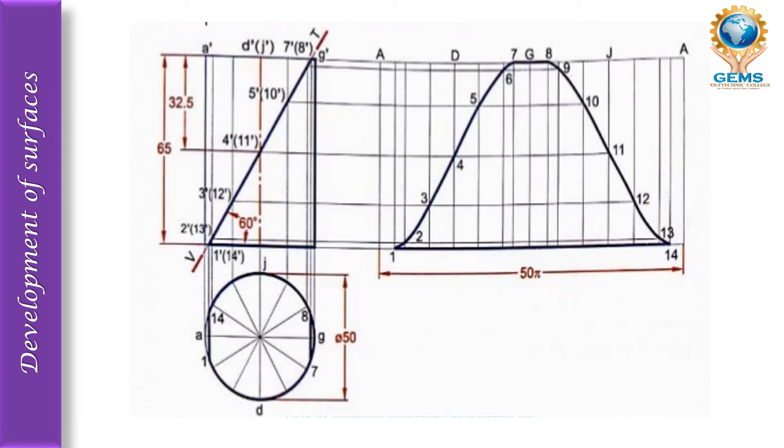...cylinder. If you see here, first of all draw a line. Here is the cylinder diameter. Draw the diameter of 50mm circle and divide it into 8 parts: a, b, c, d, e, f, g, h, i, j. Just divide it and then from each of these points draw straight lines.